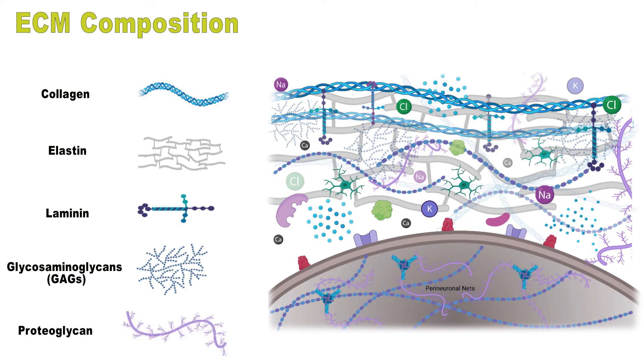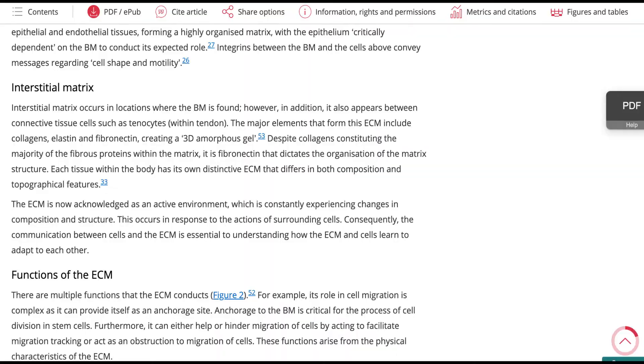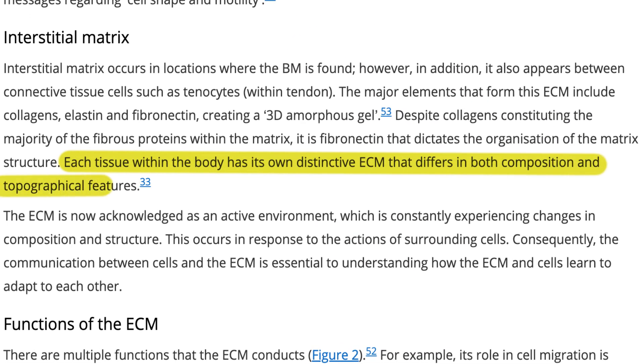The other one is proteoglycan, which contains protein cores with glycosaminoglycan side chains. So, the structure of ECM is really complex, and every tissue has its own specific ECM structures, and they contain a lot of information for stem cells.